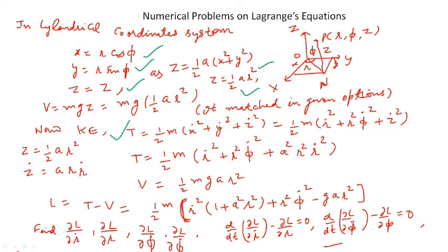In cylindrical coordinates, the kinetic energy is T = (1/2)m(ṙ² + r²φ̇² + ż²), as proved in my earlier video. Since z = (1/2)ar², we get ż = arṙ. Substituting ż into the kinetic energy expression, T becomes (1/2)m(ṙ² + r²φ̇² + a²r²ṙ²).